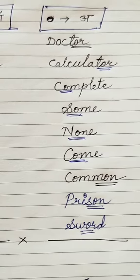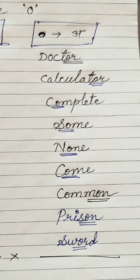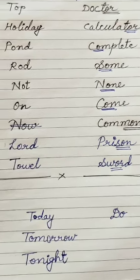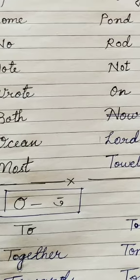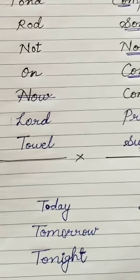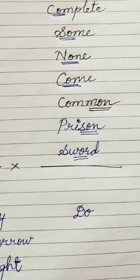अब हमारे पास एक और एक्जाम्पल है, जिसमें हम O को उ से प्रनाउंस करेंगे. जैसे टू, तुगेदर, तुवर्ड्स, तुडे, टुमॉरो, तुनाइट, एंड दू.